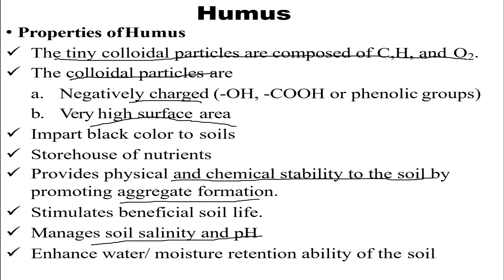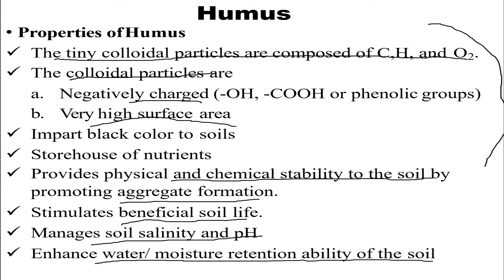Humus is a storehouse of nutrients which provides physical and chemical stability to the soil by promoting aggregate formation. It also manages soil salinity and pH, stimulates beneficial soil life, and enhances the water moisture retention ability of soil. Overall, it is definitely beneficial for the soil and the nutrient environment surrounding it.